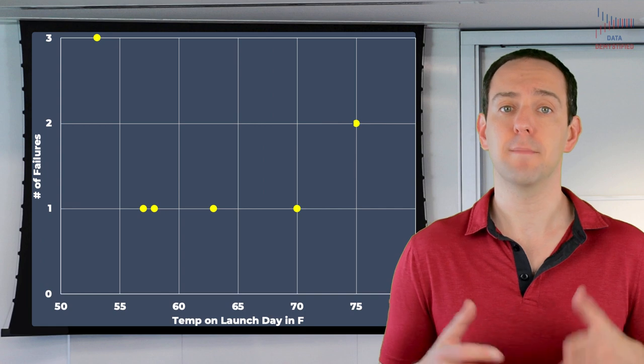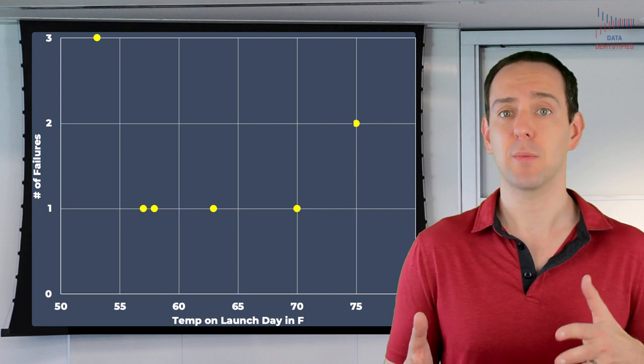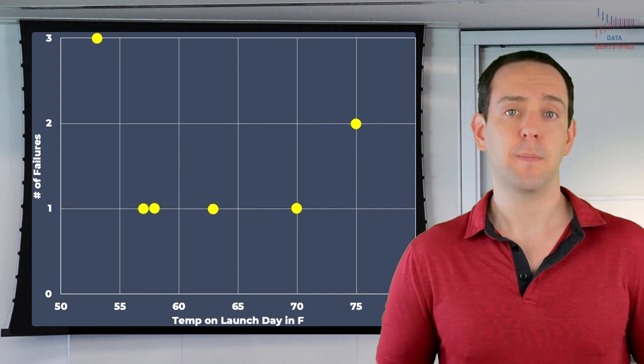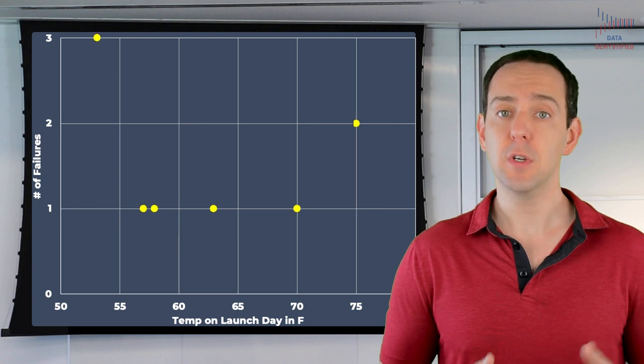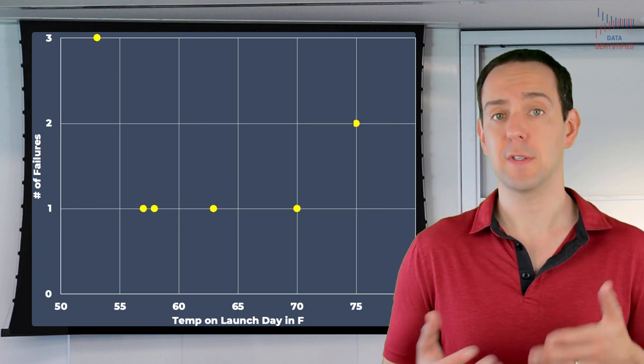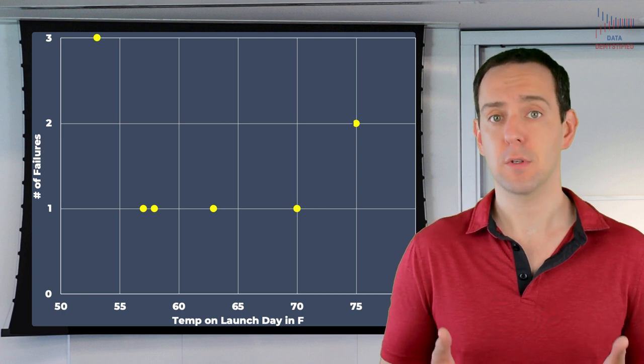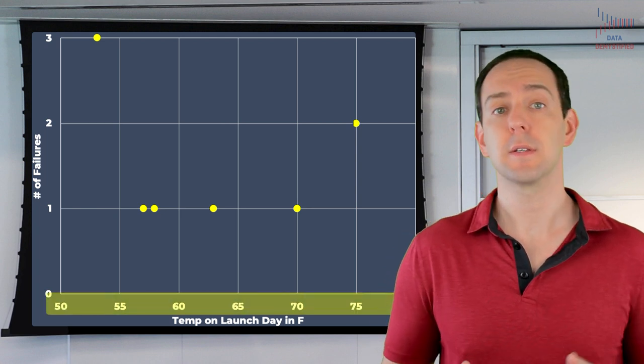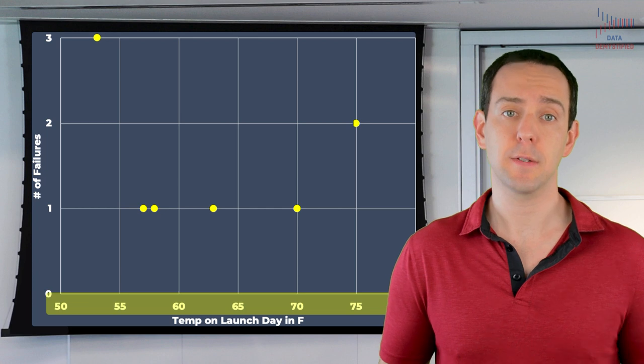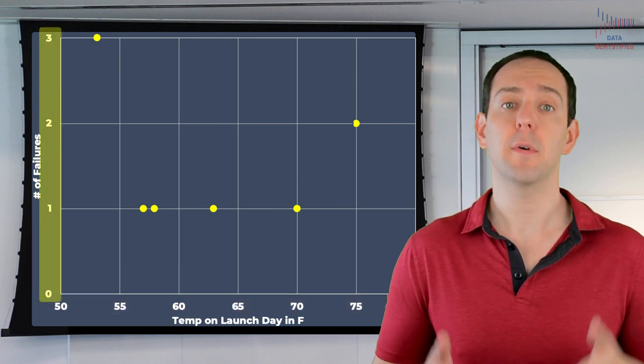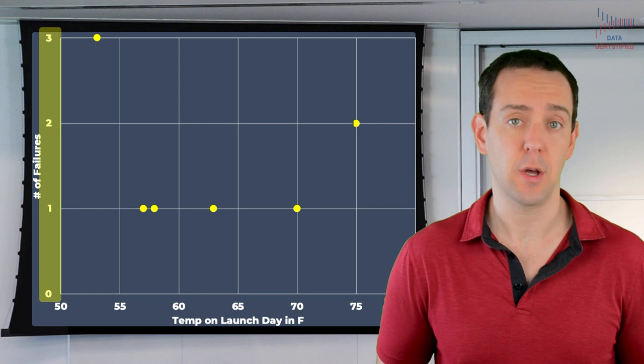I'm going to recreate this chart and make it a bit nicer to look at so that we can see how that conclusion was formed. Each of those dots represents previous launches where an O-ring had failed in some capacity. Not enough to destroy the space shuttle, but enough to take note. On the horizontal axis is the temperature the day the launch took place, and on the vertical axis is the count of the number of failure incidents for that particular launch.